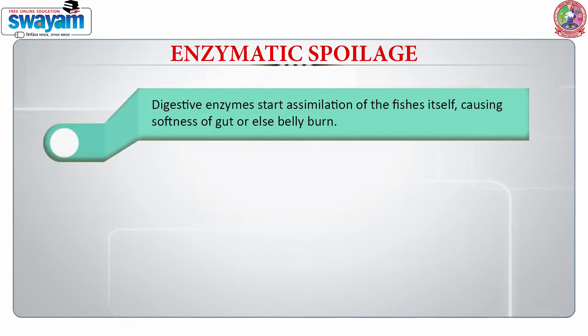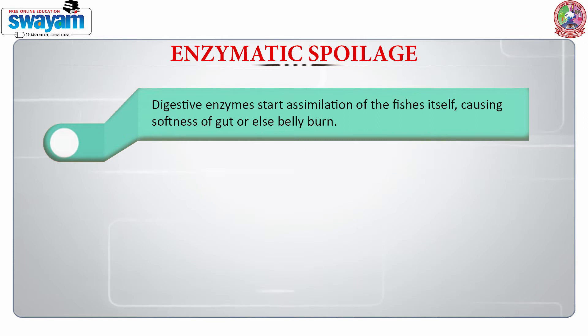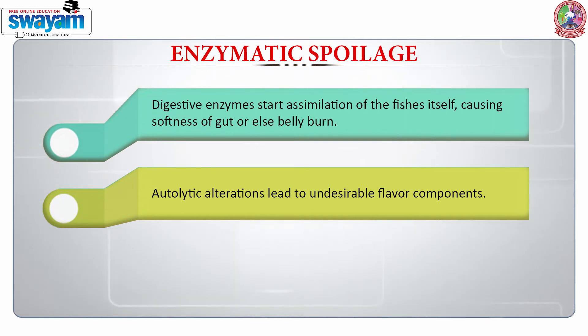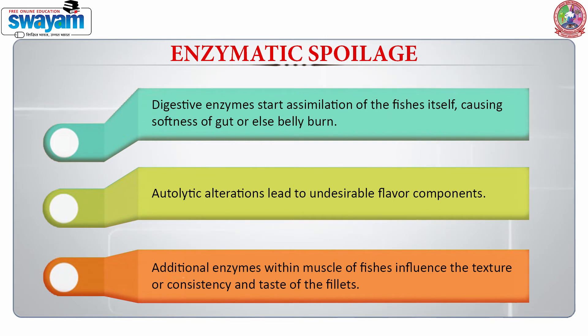The third type of spoilage associated with fishes is enzymatic spoilage, due to the action of digestive enzymes. These enzymes start autolysis of the fishes themselves, leading to softness of the gut or belly burn. When these autolytic alterations increase in number or potency, they lead to undesirable flavor generation, and these particular enzymes also influence the texture, consistency and taste of the fillets.